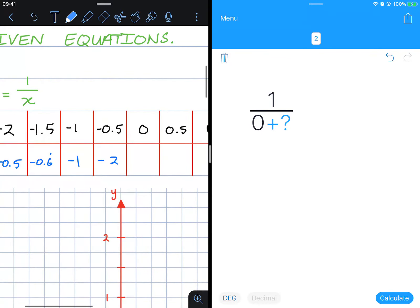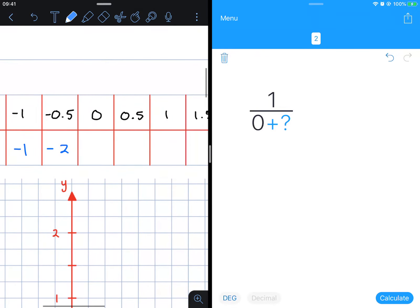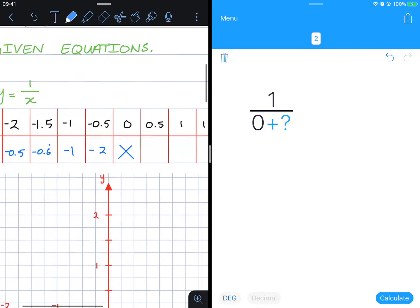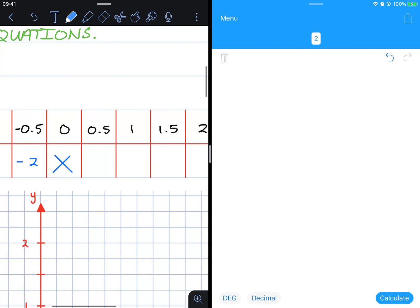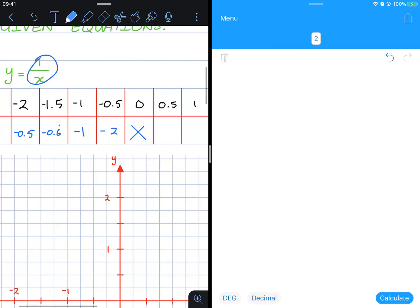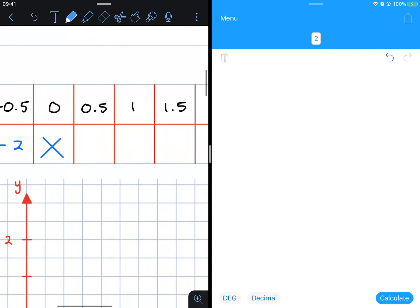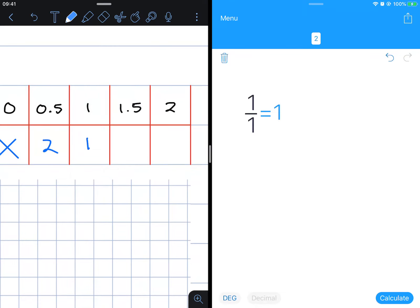In this case we leave this blank because we actually can't find an answer for 1 divided by 0. Continuing on, remember it's 1 over x. 1 over positive 0.5 gives us 2, 1 over 1 gives us 1.